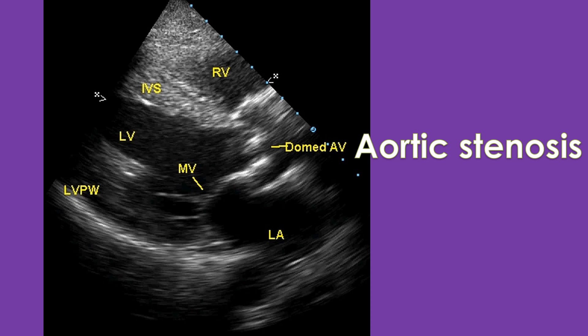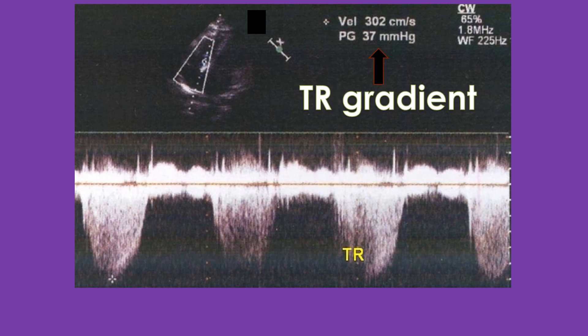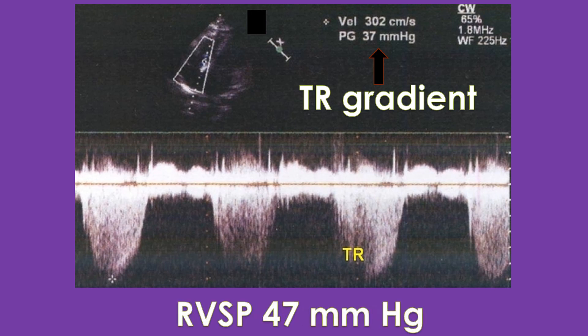Regurgitation can be graded as trivial, mild, moderate, and severe. Trivial regurgitation, as the name implies, is usually ignored, especially in relation to the right-sided valves — pulmonary and tricuspid. Pressure gradients across the valves will be mentioned when the valve is narrowed, and the gradient increases as the severity of the narrowing increases. When there is a leak in the tricuspid valve, the pressure difference between the right ventricle and right atrium can be calculated. This is usually mentioned as TR, or tricuspid regurgitation gradient. A nominal value of 10 is added to this gradient and mentioned as the estimated right ventricular systolic pressure, or RVSP. An elevated RVSP implies increased pressure in the pulmonary artery, known as pulmonary hypertension, if the pulmonary valve is not obstructed.